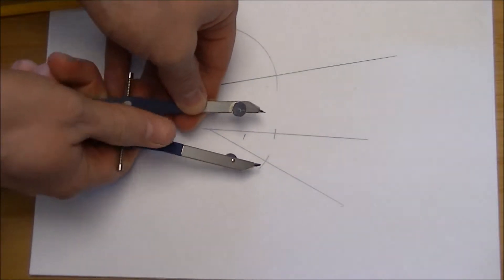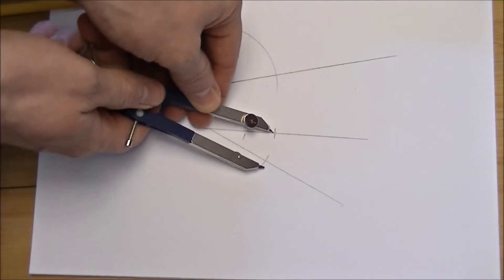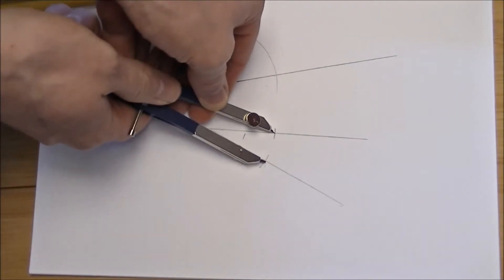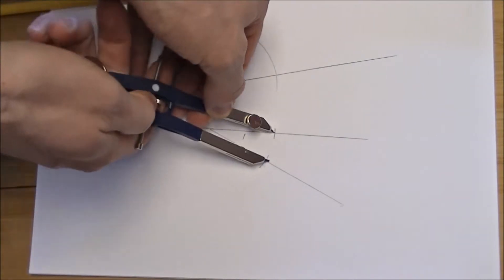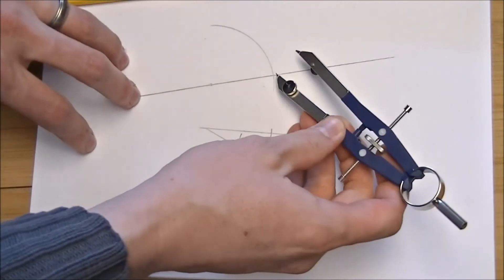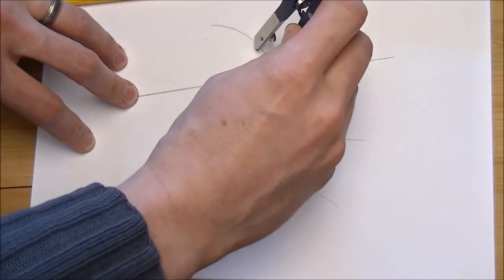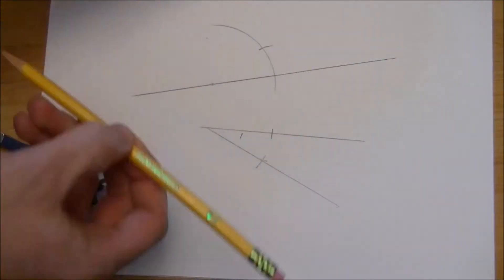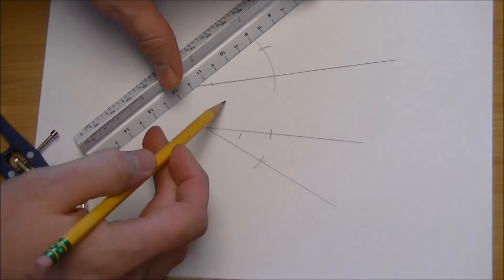Now, what I do is I measure the distance from here to here. And that's going to be the same distance I use there. This gives me two points that I can use.